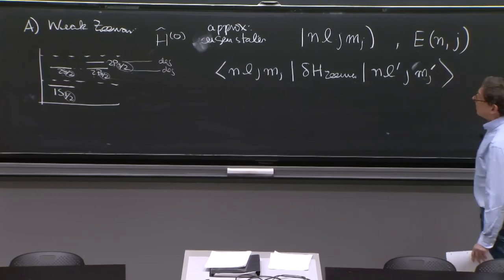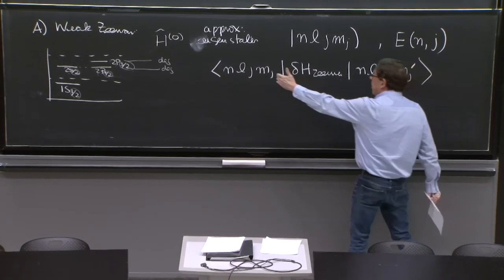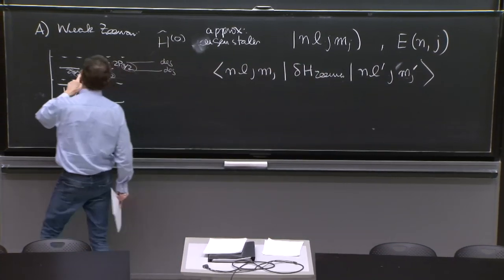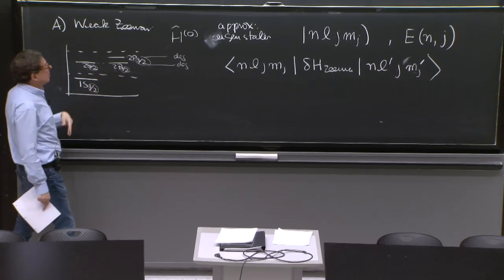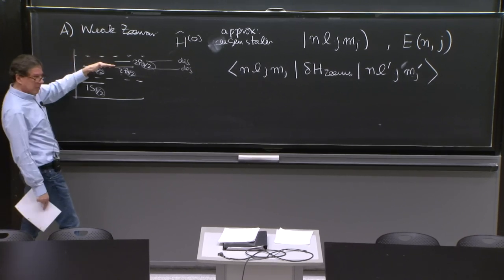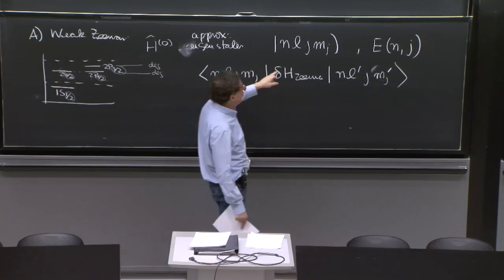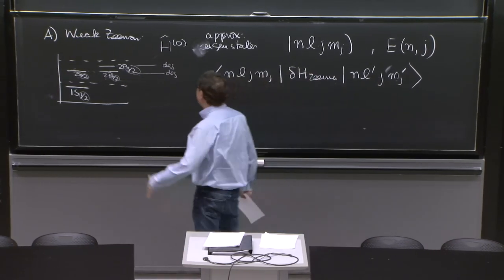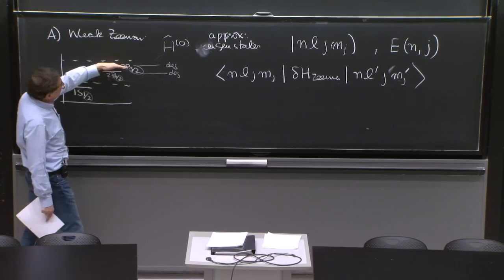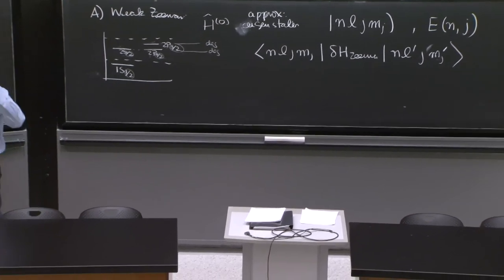So what are our degeneracies? Our degeneracies are when you have a given value of J. So a degenerate subspace can have different Ls, for example here, but the same J. And therefore, different Mjs. Or within a given J multiplet, it might have different Mjs. So this is the scope of the degeneracy.